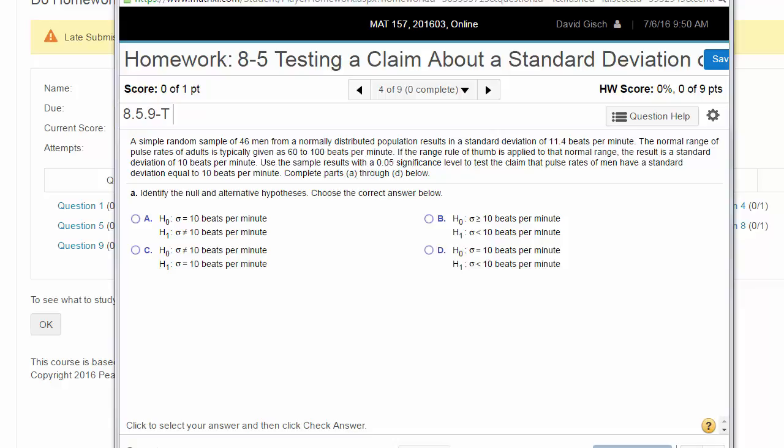Range rule of thumb, if you remember, you take the range, which 100 minus 60 would be 40, and you divide by 4. And that gives you an estimate of the standard deviation. So that's the range rule of thumb. That's where 10 comes from. The 40 divided by 4 is 10. Use the sample results with a 0.05 significance level to test the claim that pulse rates of men have a standard deviation equal to 10 beats per minute.